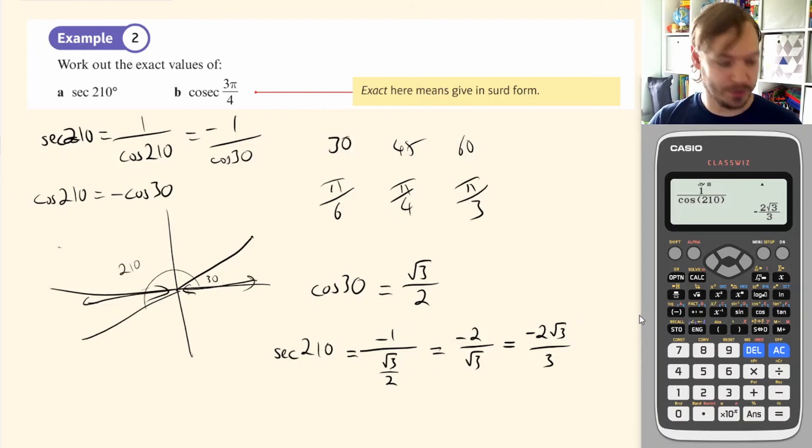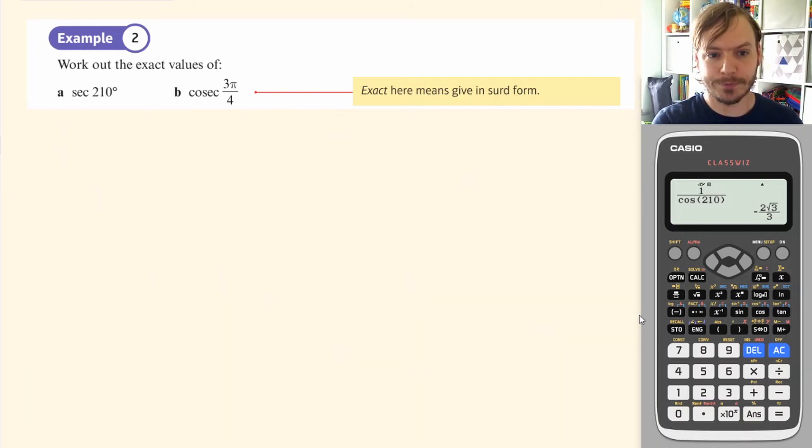OK, so if I just clear all of that off. Cosec of 3 pi over 4. So first of all, cosec of 3 pi over 4 is equal to 1 over sine of 3 pi over 4.